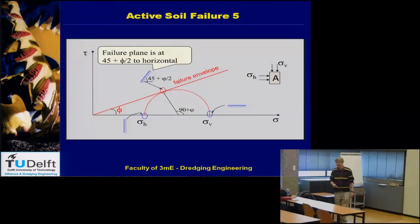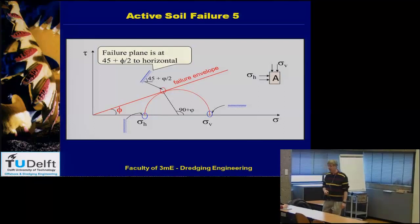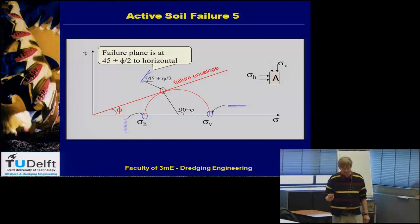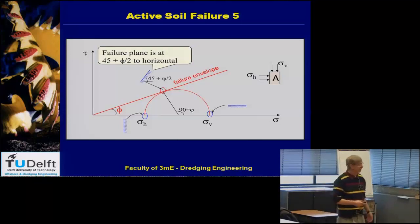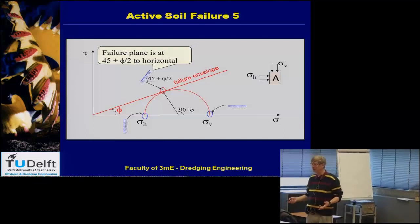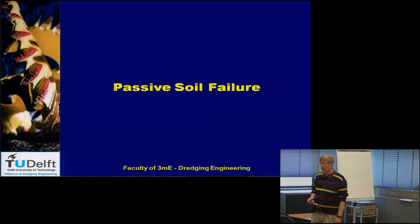In the Mohr circle for active failure, the biggest stress is the vertical stress and the smallest is the horizontal stress. The tangent line from the origin touches the circle at the angle of internal friction phi. In soil mechanics, this is called active soil failure because the soil takes action — from the soil mechanics perspective it makes sense, though it feels counterintuitive since normally we associate 'active' with an external agent acting.